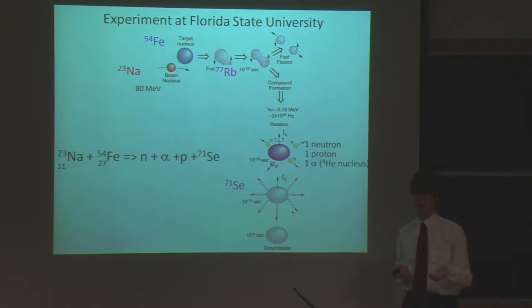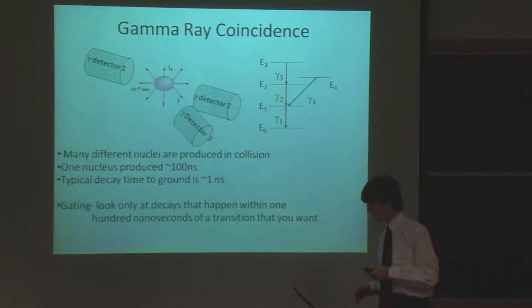So I was trying to find the spin assignments of these using first gating and then DCO ratios. The data actually comes from an experiment at Florida State University. We take sodium and slam it into an iron target, and that forms bromine-77, which can decay many different ways, but one of the ways is by emitting a neutron, proton, and an alpha particle. But then it doesn't have enough energy to spit out a nucleon, but it still wants to lose energy, so it shoots out gamma rays, and the gamma rays are what we measure.